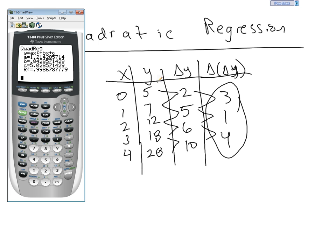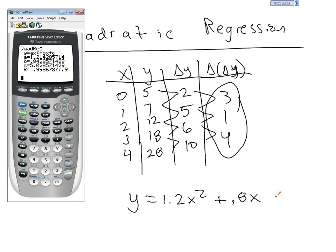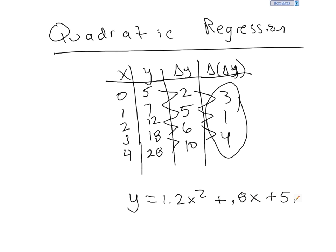It'll take us back to the home screen. And lo and behold, there's the quadratic regression in the form Y equals AX squared plus BX plus C. It tells us that A is about 1.2, B is about 0.8, C is about 5, and R squared is about almost 99.9%, which is really, really good. So, our equation would be Y equals 1.2X squared plus 0.8X plus 5.0.